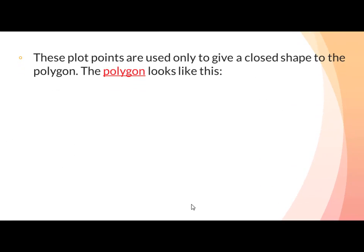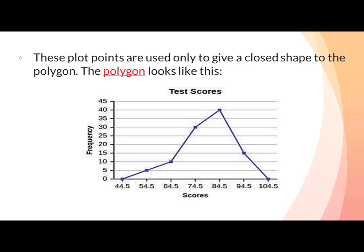These boundary points are used only to give a closed shape to the polygon. As shown in the diagram, the polygon starts from 0 at 44.5 since no student obtained those marks. At 54.5, the dot shows that 5 students have that class mark, so the frequency is 5. At 64.5, the dot shows that 10 students obtained those marks, giving a frequency of 10.